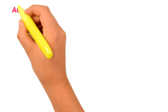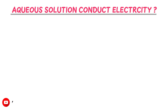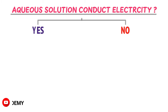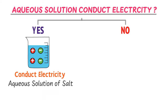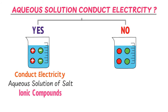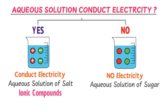Do aqueous solutions conduct electricity? The answer is yes and no. If there are free ions in the aqueous solution, it will conduct electricity. For example, the aqueous solution of salt has free ions like sodium and chlorine, so it conducts electricity. Aqueous solutions of all ionic compounds conduct electricity. If there are no free ions in the aqueous solution, it will not conduct electricity — like the aqueous solution of sugar, which has no free ions and therefore does not conduct electricity.